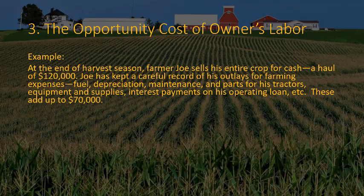Here's an example. At the end of the harvest season, Farmer Joe sells his entire crop for $120,000. He has kept careful records of his outlays: fuel for tractors, depreciation and maintenance on tractors, parts, equipment and supplies, interest payments on an operating loan — totaling $70,000. A rough calculation might say: $120,000 minus $70,000 equals $50,000 profit. Joe will say he earned $50,000 farming last year. That's not incorrect, but we want to think about the opportunity cost of his labor.